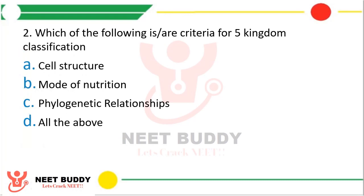Which of the following is or are criteria for five kingdom classification? Option A cell structure, option B mode of nutrition, option C phylogenetic relationships. The correct answer is option D, all of the above.